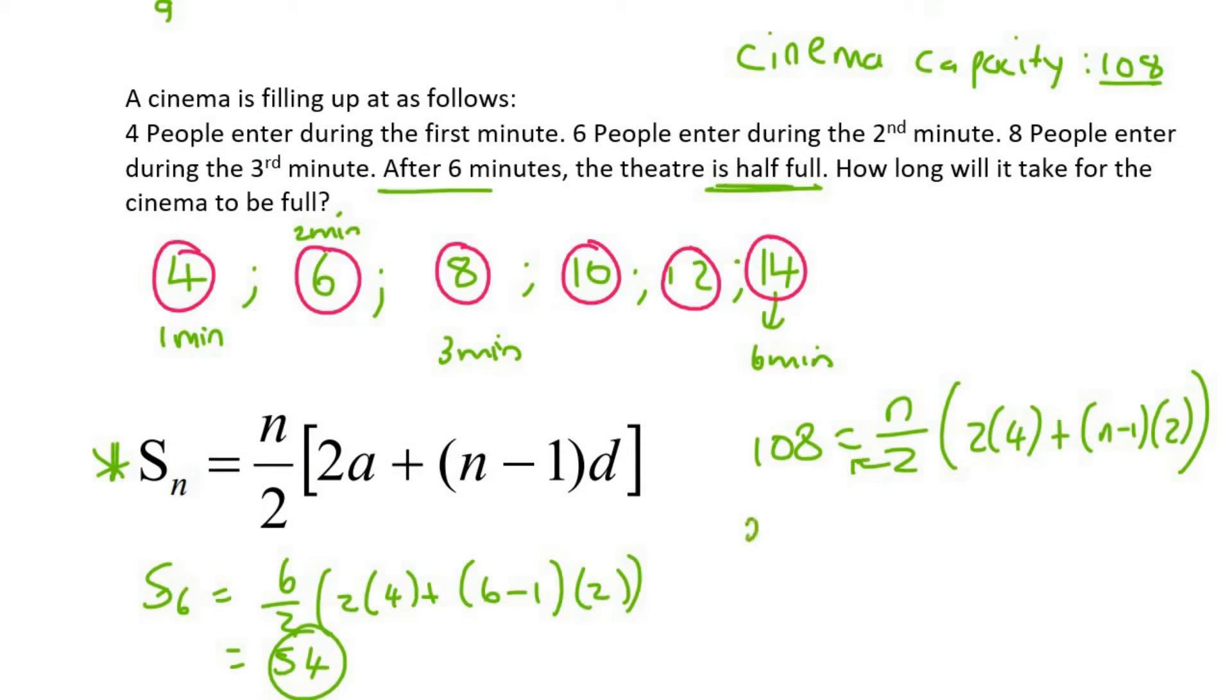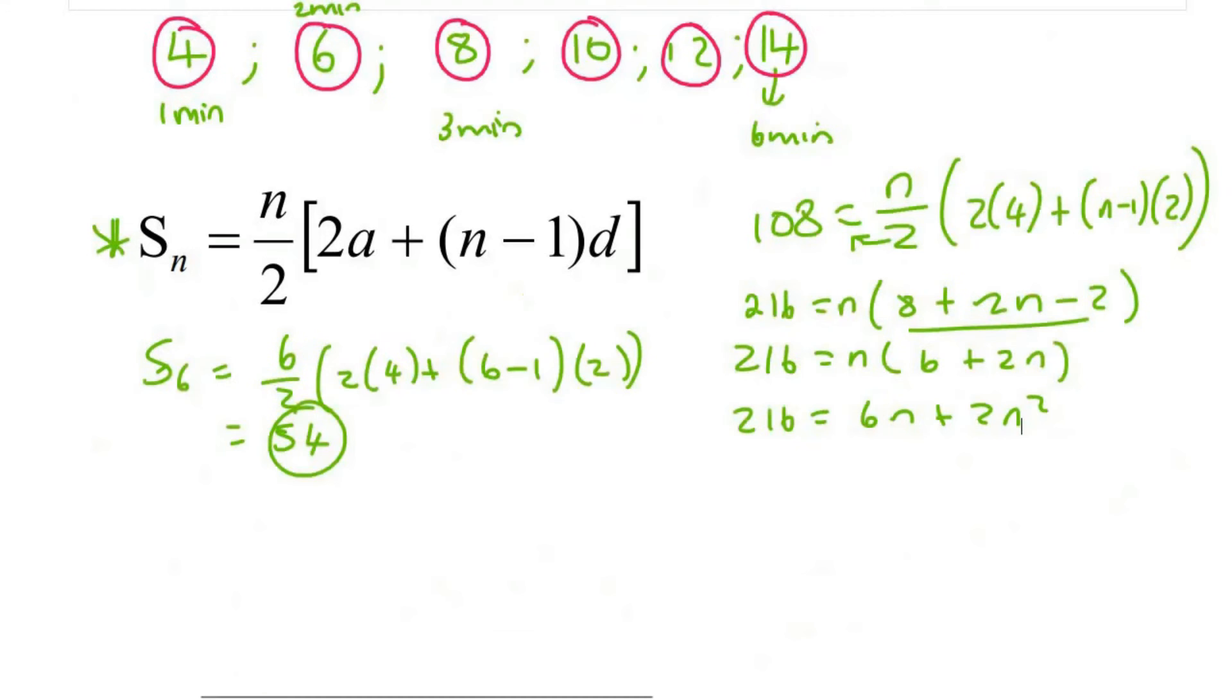Now I take this two over, so it becomes 216, and then eight plus 2N minus two. I'm going to simplify these numbers here, so it'll become eight minus two, which is six. I'm then going to multiply the N into the bracket, and then it's a trinomial. So I'm going to keep the zero on the left and use the quadratic formula to solve.